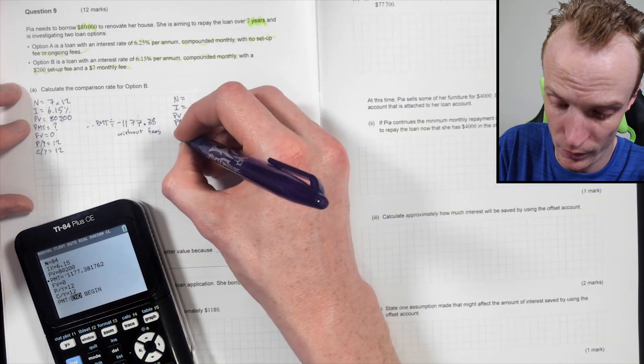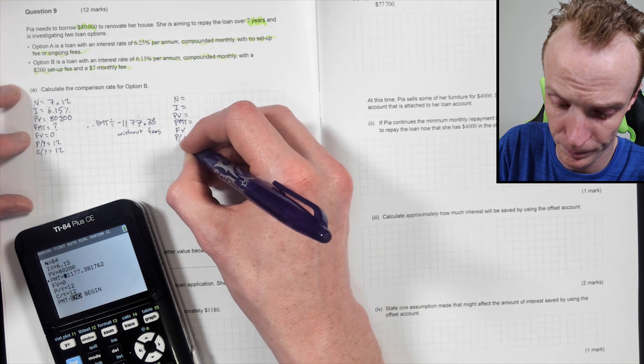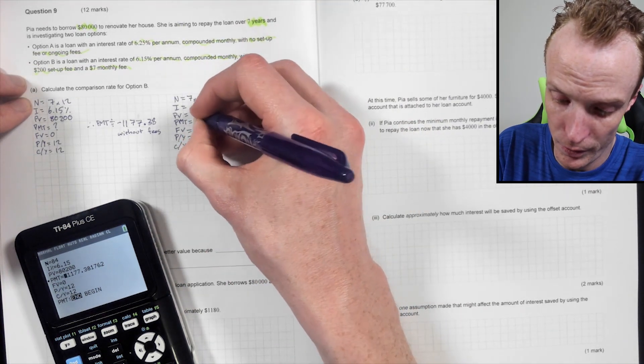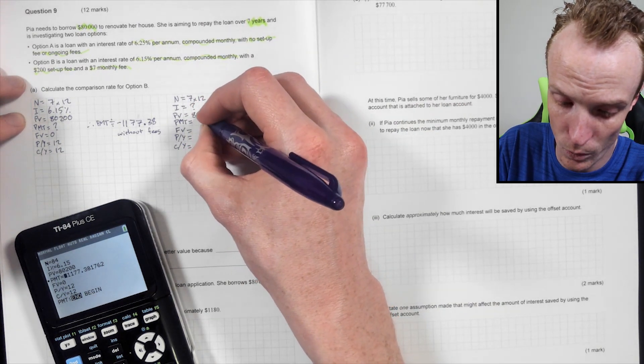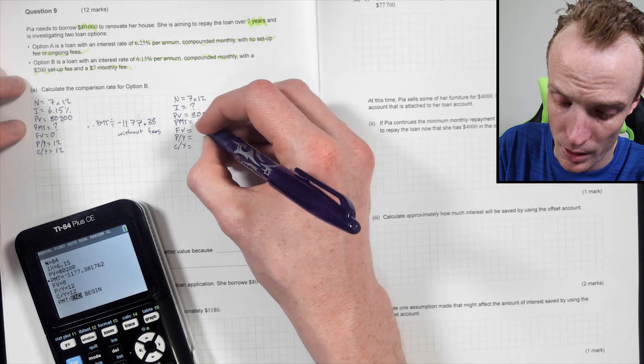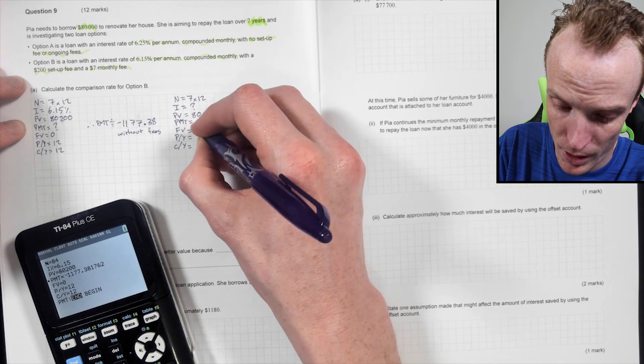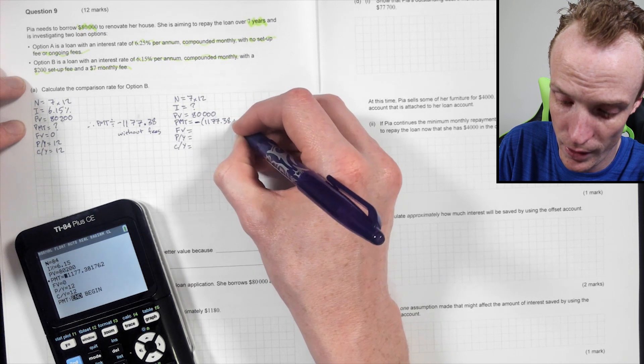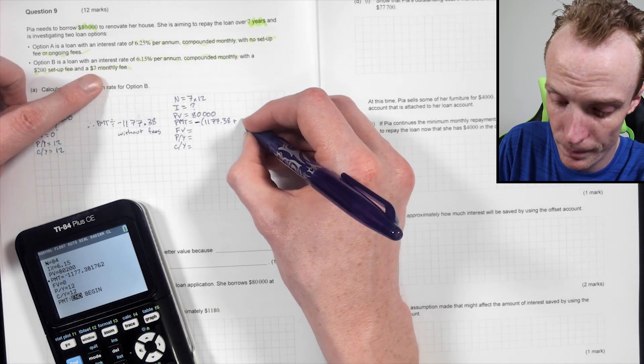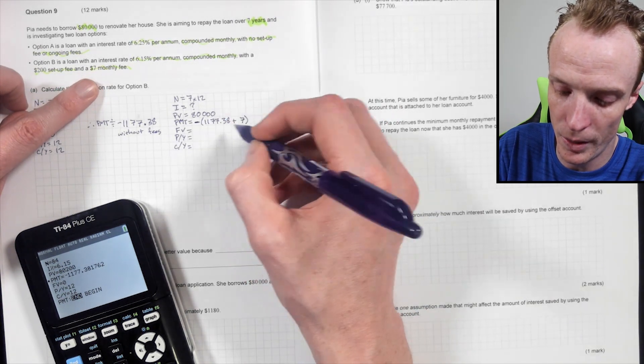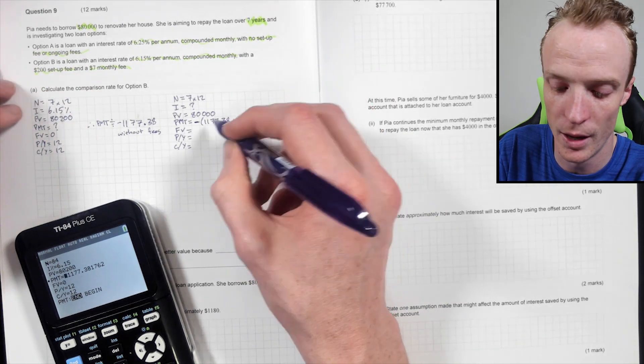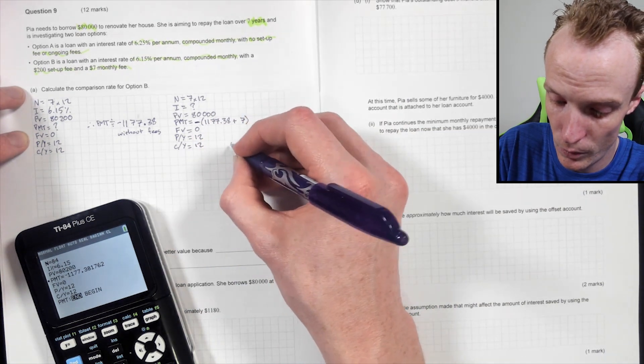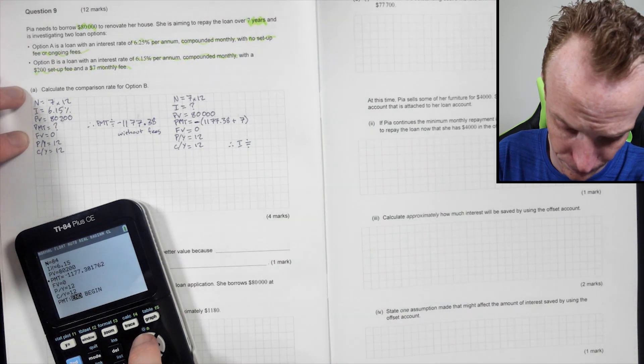Now I need to do the future value, the PY and the CY. Now the N will still be seven by 12. What I'm after is the comparison rate, which is the I. The present value, now I'm doing it for the original loan of 80,000. The PMT is going to be my negative. I'm just going to be negative at the front. 1,177.38. Add on with my fees. My monthly fee is seven. Do that in brackets, or you can just do the negative without the brackets, but you've got to subtract seven. Just got to be careful with that. Your future value is still be zero. Your PY and CY is still 12.